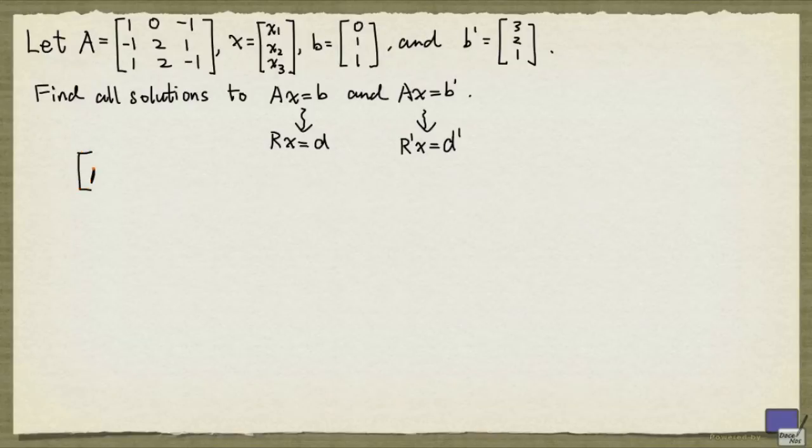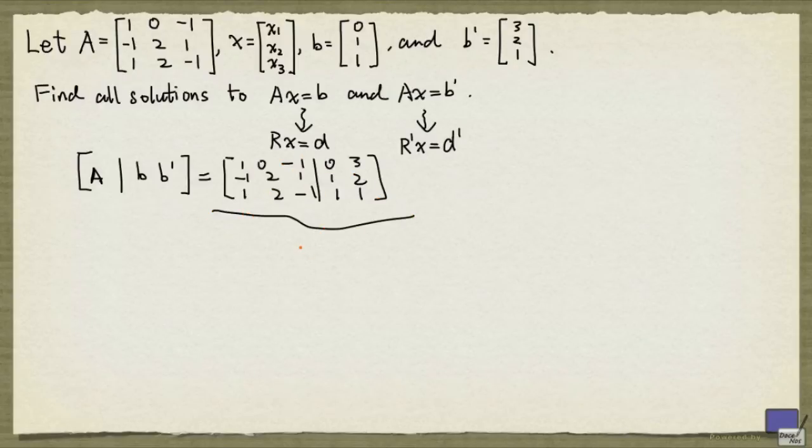And so we can form the extended augmented matrix as follows. So we take the matrix A and extend it with the columns b and b'. And we are going to perform elementary row operations on this matrix until this part that corresponds to the variables is in reduced row echelon form.